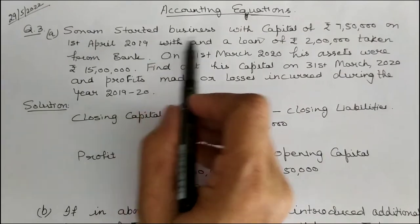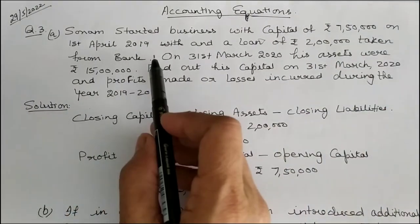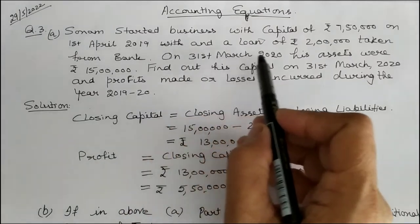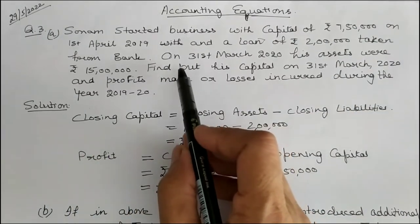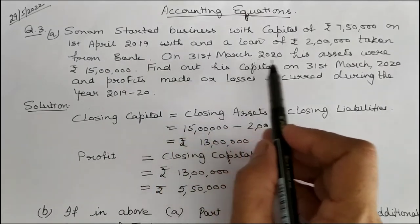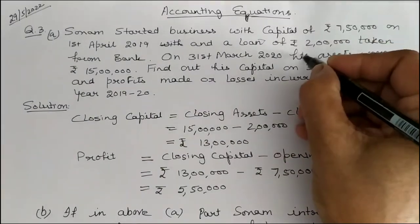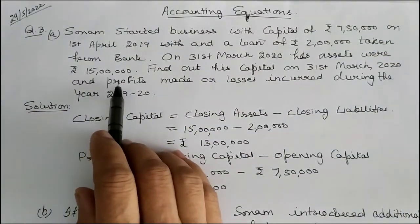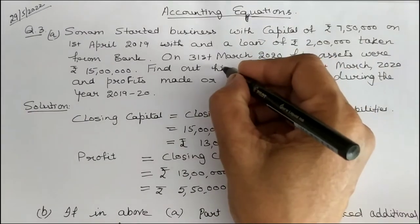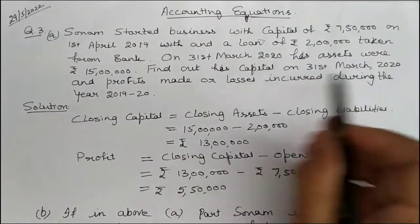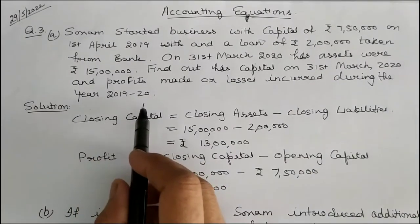Sonam started a business with a capital of 7,50,000 on 1st April 2019 and a loan of 2,00,000 taken from a bank. On 31st March 2020, her assets were 15,00,000. Find out her capital on 31st March 2020 and profits made or losses incurred during the year 2019-20.